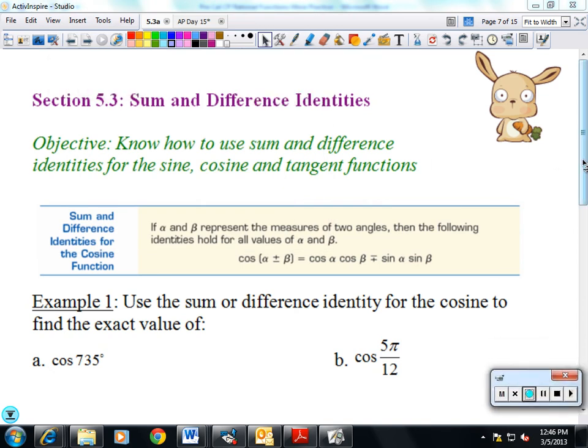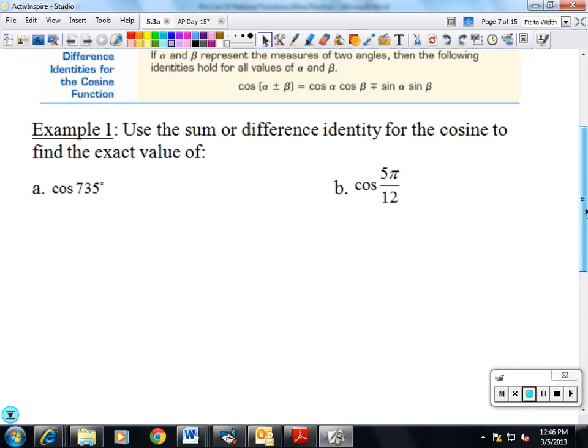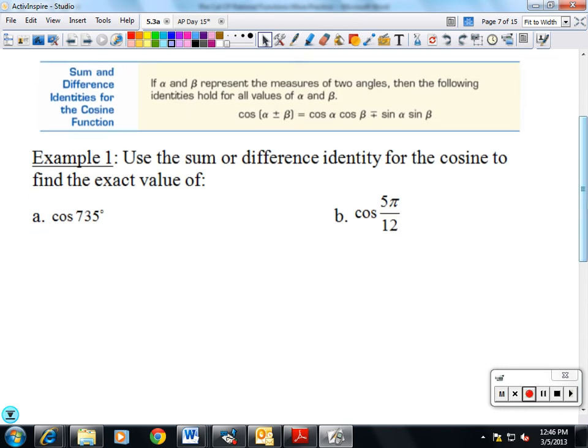All right, 5.3. What we're going to do is use the sum or difference identities for sine and cosine to find the exact value of cosine of 735 degrees. 735 is awful big, so we're going to drop that down. We're going to subtract 360 from it to get something that's actually on our circle, which is cosine of 375.